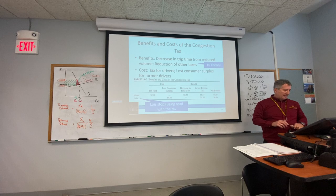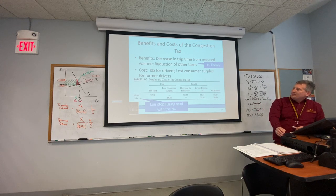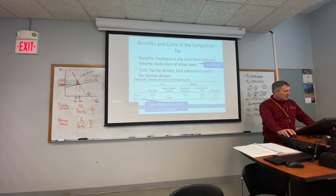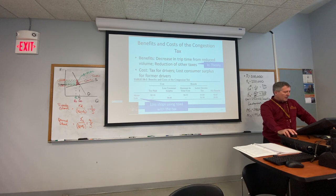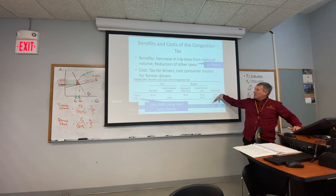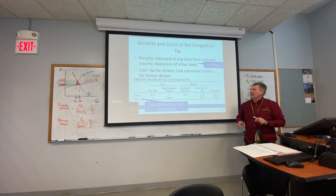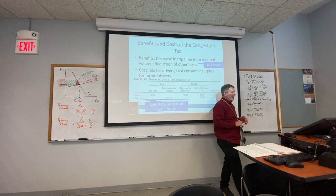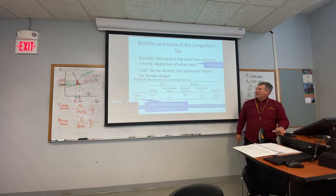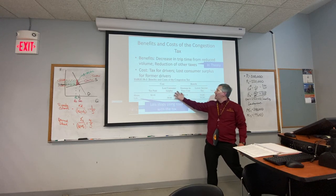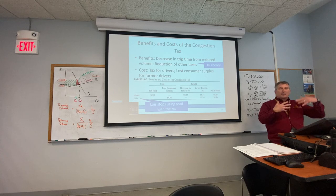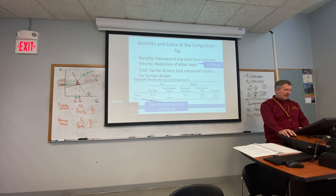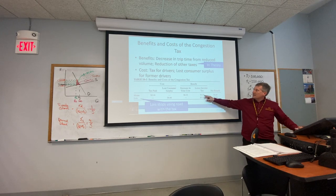We can use consumer and producer surplus to think about these issues. We have Hiram and Lois. Lois stops using the road with the tax — she has a decrease in cost, lower income tax, and a net benefit. In theory, this is the central planner moving the shells around: keeping Lois off the road is a net benefit to society, and Hiram ends up paying the tax while continuing to use the road — the person who most values it, uses it and pays for it, while others benefit through lower income taxes.